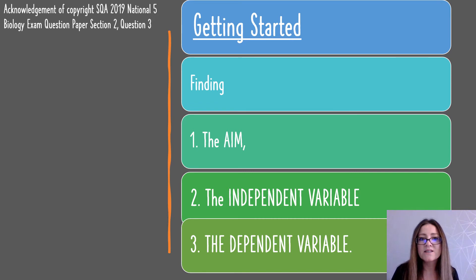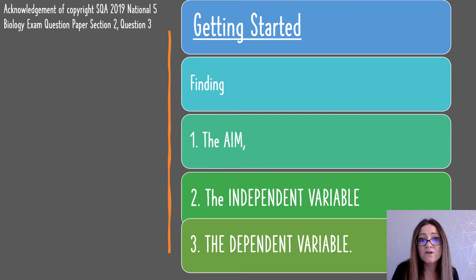We're going to have a look at a question taken from the SQA 2019 National Five biology exam paper, section two, question three. To get started with any experimental question, you must read the question really carefully and identify the aim. Then from the aim, you've got to work out what is the independent variable and what is the dependent variable.